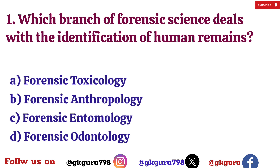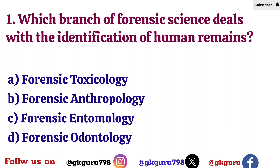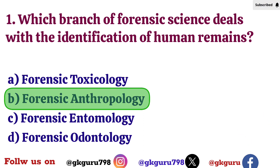First question: Which branch of forensic science deals with identification of human remains? Option A: Forensic toxicology. Option B: Forensic anthropology. Option C: Forensic entomology. Option D: Forensic odontology. Correct answer: Option B — Forensic anthropology.